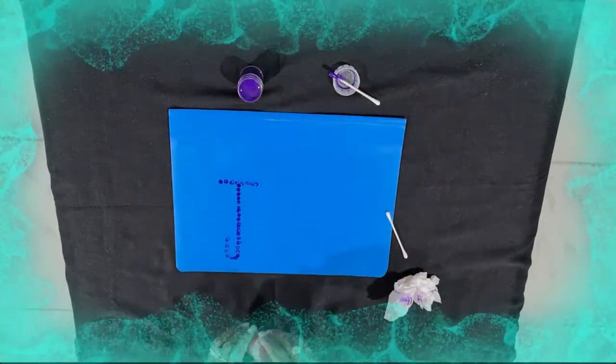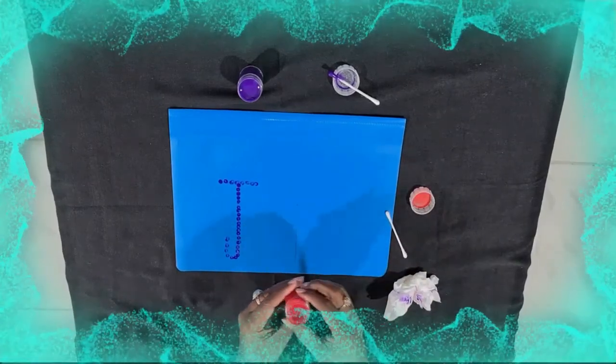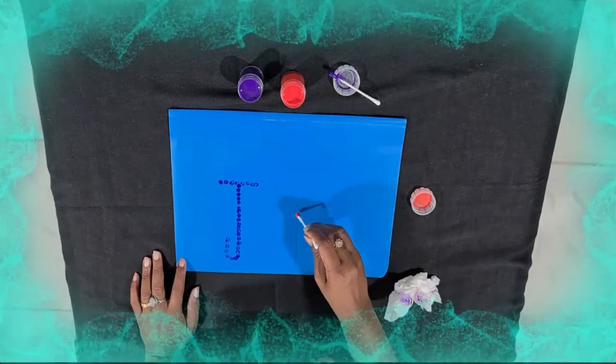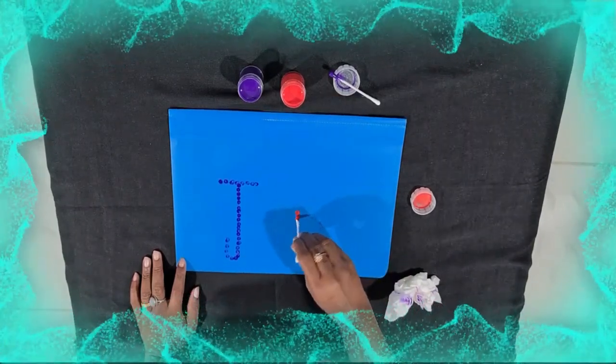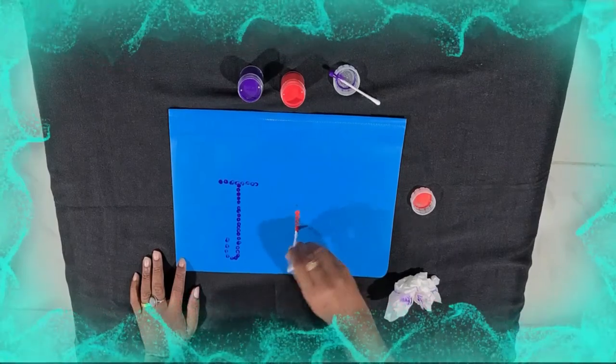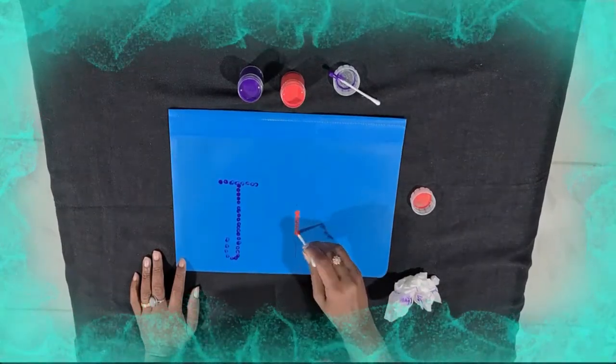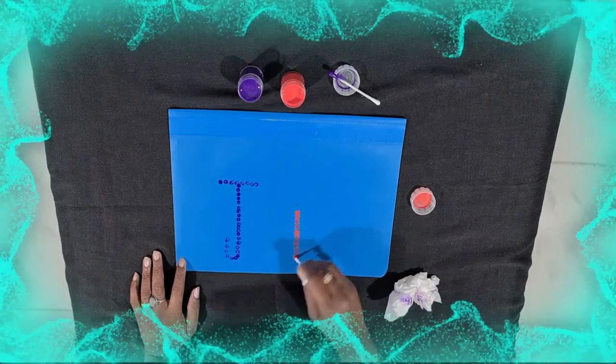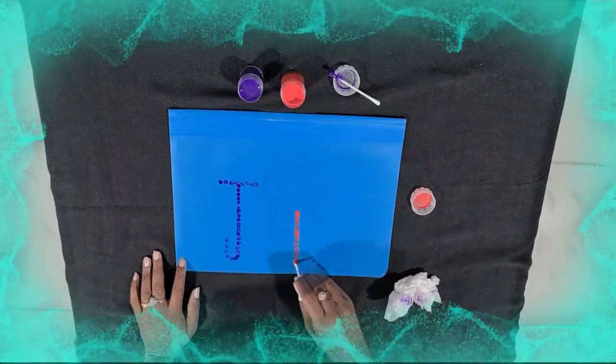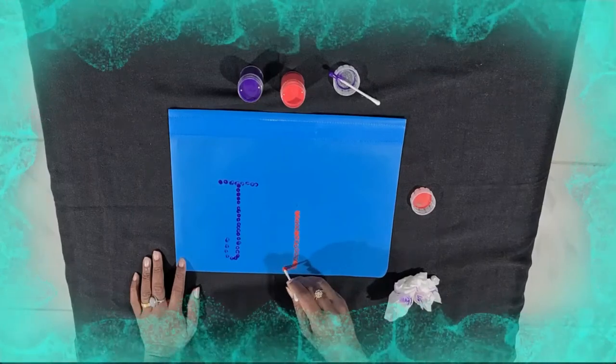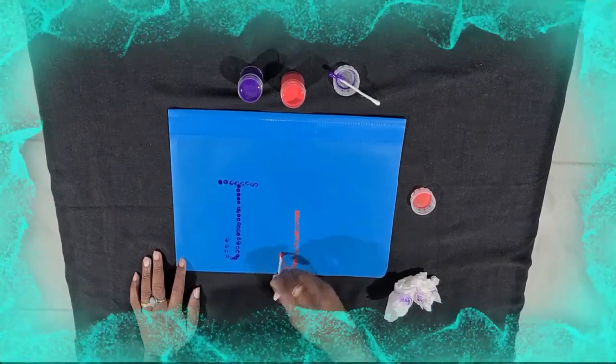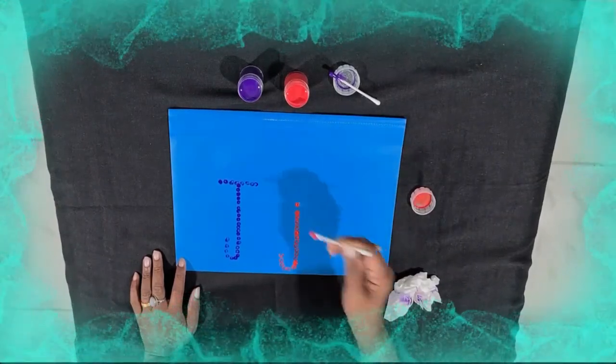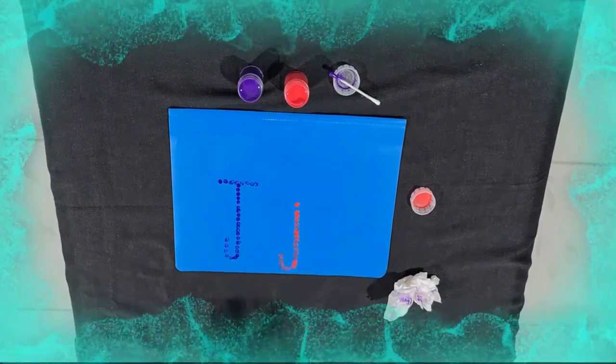Now I am going to do lowercase J. I will use red color paint. This is very good activity for your fingertips. Fine motor skill development activity. Now I am making the hook. Yes. Now I will keep a small dot top. Actually it should be a dot.